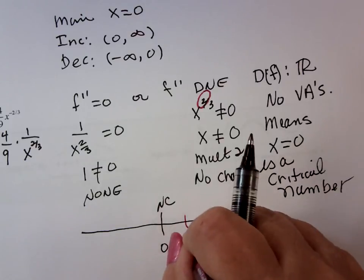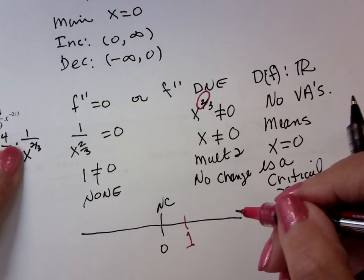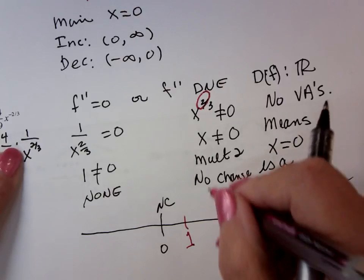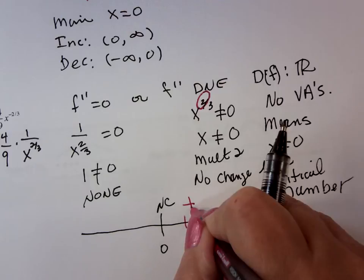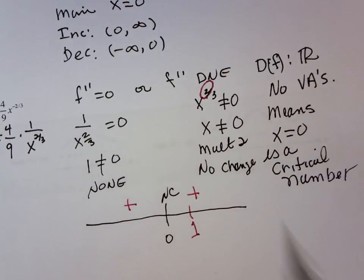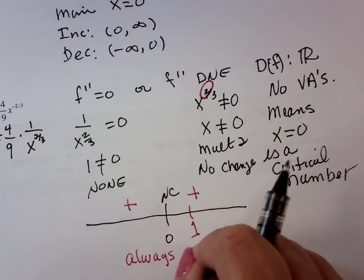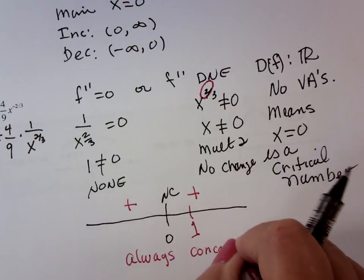Choose one. And four ninths, one over one to the two thirds, positive or negative. Positive. No change. Positive. This guy is always concave up.